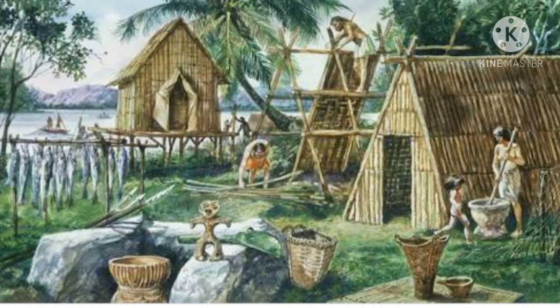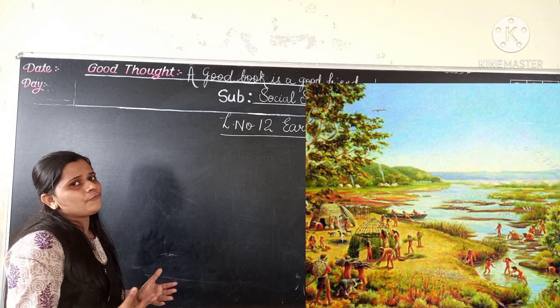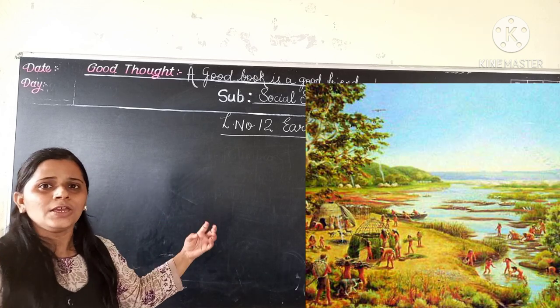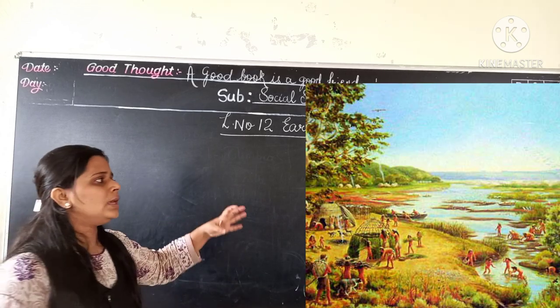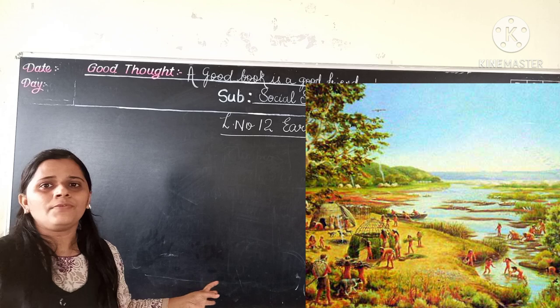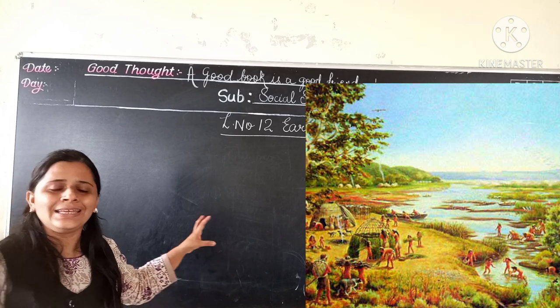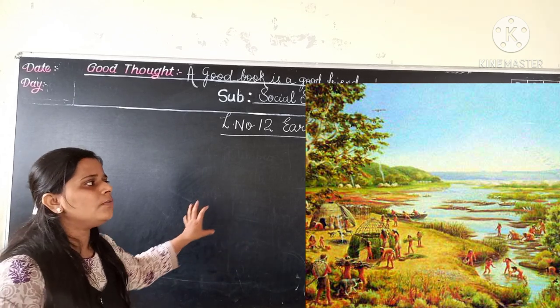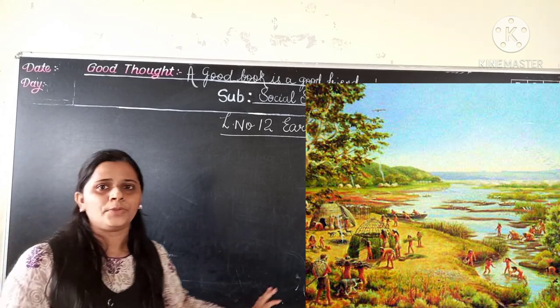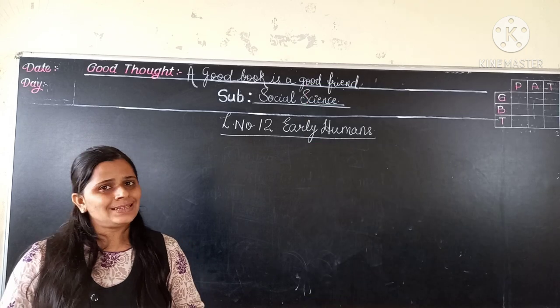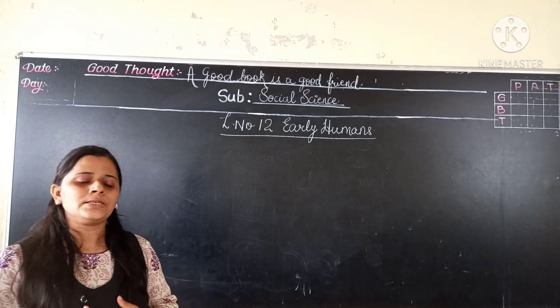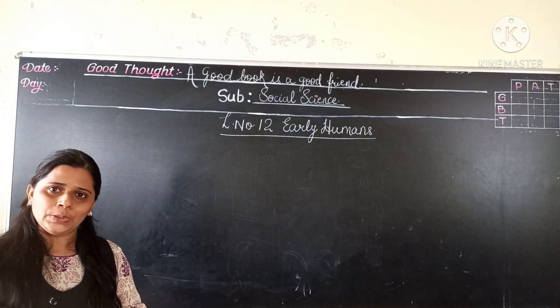And also they could collect fish and eat them. So in a settled life, we discussed that early humans slowly, everyone settled near the river and they formed a village community. This we discussed in the last video.